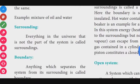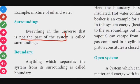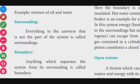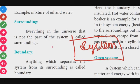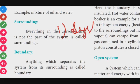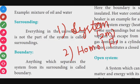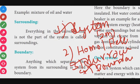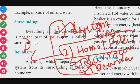Everything in the universe that is not part of the system is the surroundings. The boundary separates the system from the surroundings. Two-mark questions include: define system and surroundings with examples, and distinguish homogeneous from heterogeneous systems. The boundary can also be defined by the nature of the system.